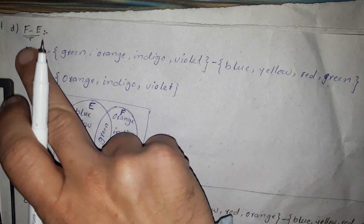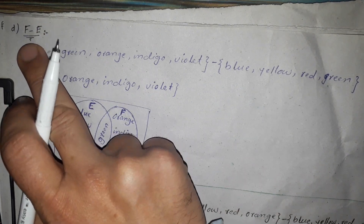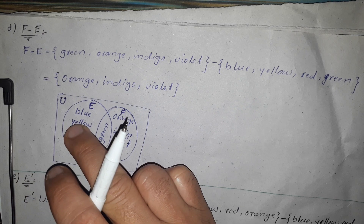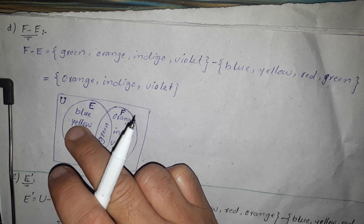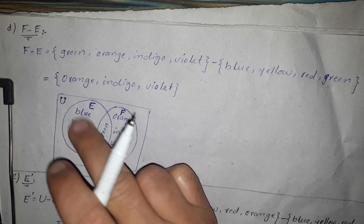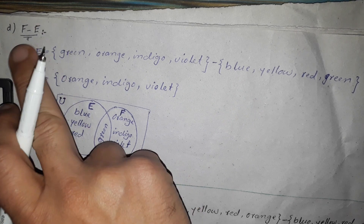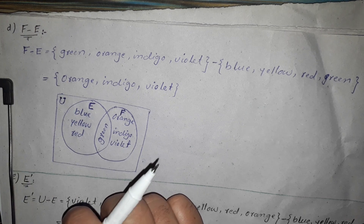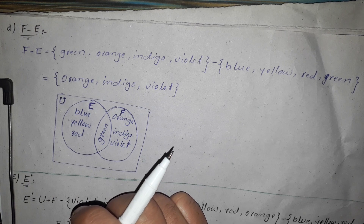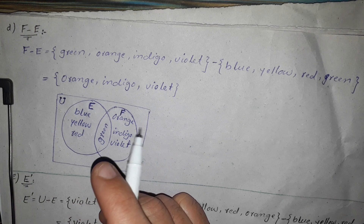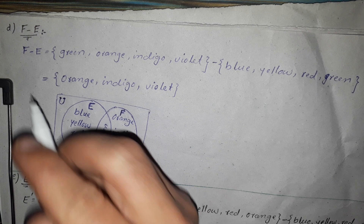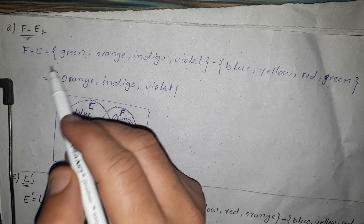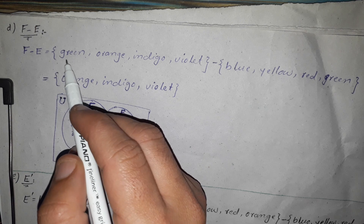Now question 3 is part D. We have 100 parts: A, B, C. F difference E. F difference E is equal to...